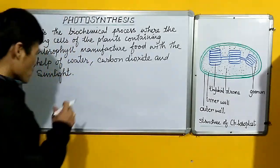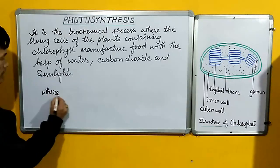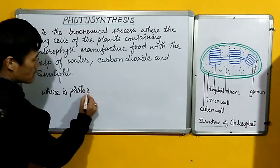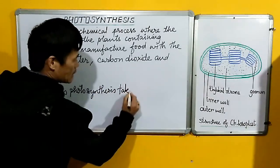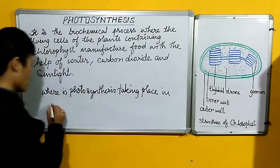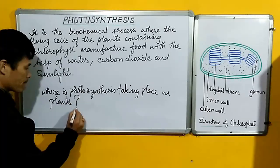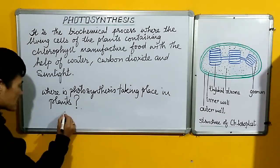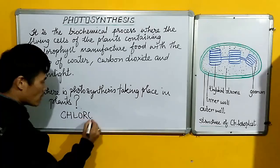Now the question arises: where is photosynthesis taking place in plants? The answer is it takes place in the chloroplast.